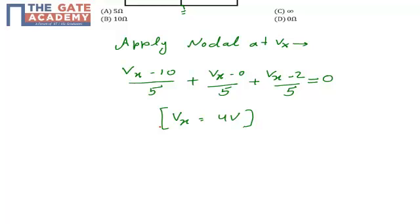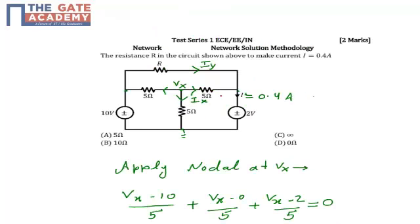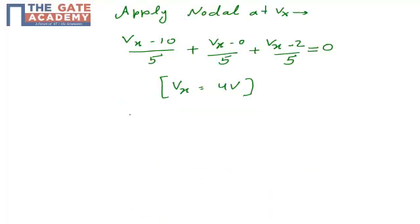You can see in this diagram that current Ix is nothing but Vx minus 2 by 5, because current Ix is the current flowing in the resistor of 5 ohm. So I can calculate the value of Ix as Vx minus 2 by 5. I know my Vx is 4 volts. 4 minus 2 by 5 equals 0.4 ampere.